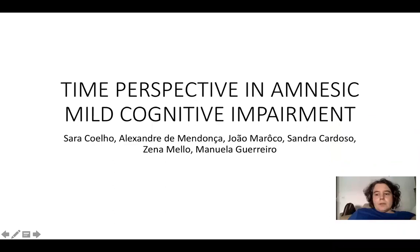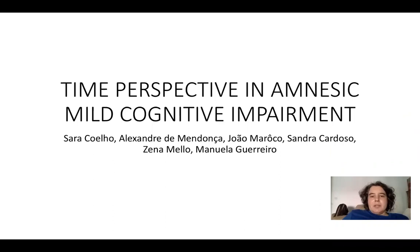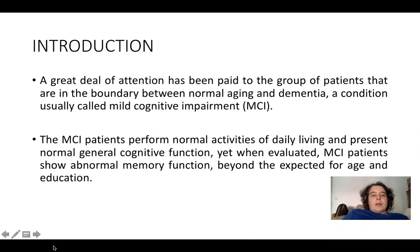Good morning everybody. My presentation is about time perspective in amnesic mild cognitive impairment. A great deal of attention has been paid to the group of patients in the boundary between normal aging and dementia, a condition usually called mild cognitive impairment. MCI patients perform normal activities of daily living and present normal general cognitive function, yet when evaluated, MCI patients show abnormal memory function beyond what is expected for age and education.